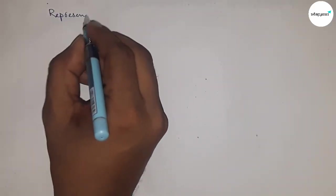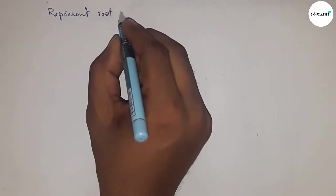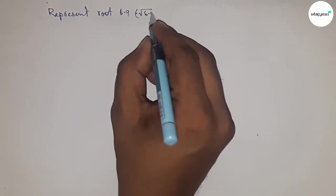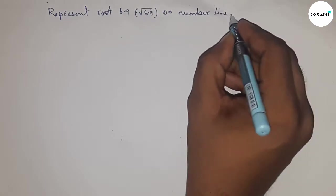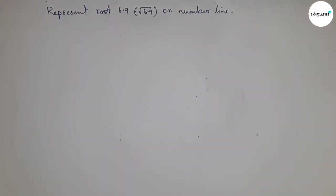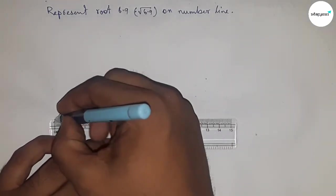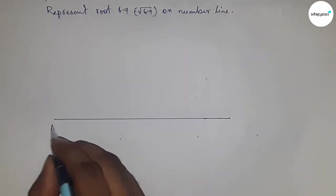Hi everyone, welcome to SSR classes. Today we're talking about how to represent root 6.9 on a number line. Let's start. First of all, draw a line of any length, and this is the AX line.